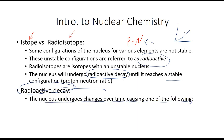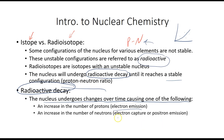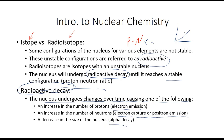When something undergoes radioactive decay, the nucleus changes over time. One of the following things will happen: we either increase the number of protons through electron emission, increase the number of neutrons through electron capture or positron emission, or decrease the size of the nucleus through alpha decay. It's worth noting that in all these processes, we also undergo some gamma radiation — that's pure energy leaving the nucleus, which can cause cellular damage.